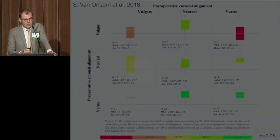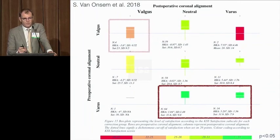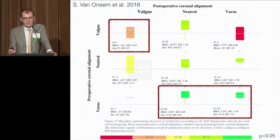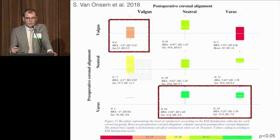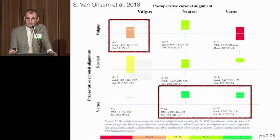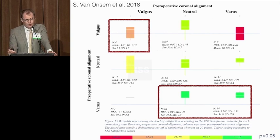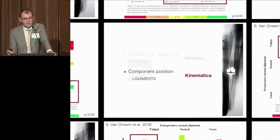What's the science? For four years we looked at patient satisfaction following Bob Bourne's work in Canada. The slide shows post-op alignment on the x-axis versus pre-op alignment on the y-axis. What you see is that leaving valgus patients in valgus means they are not happy, whereas bringing varus patients back to neutral or leaving them in a little varus means they are happy. That is the major conclusion of this work by Stefan van Onsen.